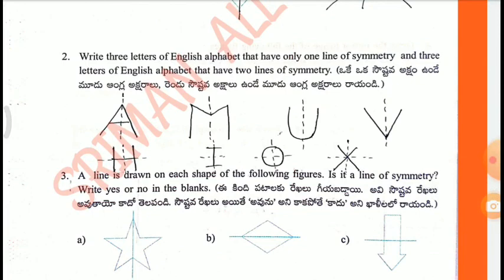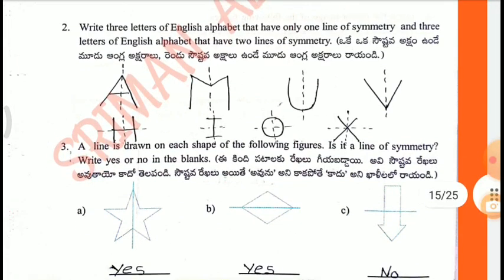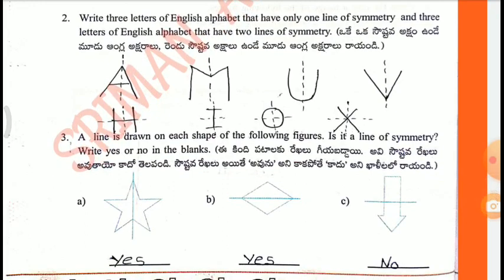Second one: Write three letters of English alphabets that have only one line of symmetry, and three letters that have two lines of symmetry. A, M, U, V have one line of symmetry. H, I, O, X have two lines of symmetry.